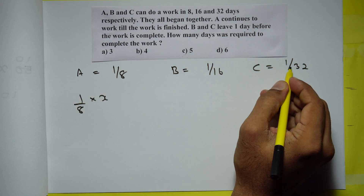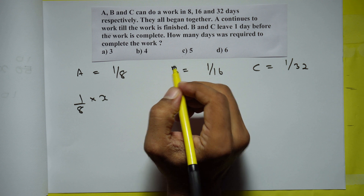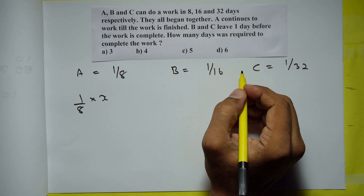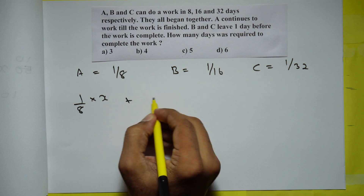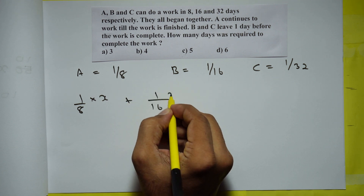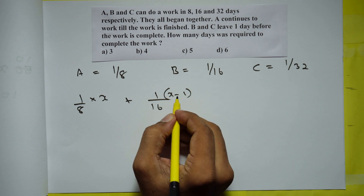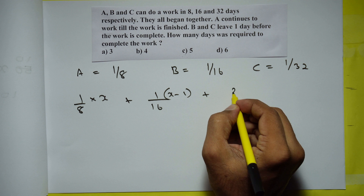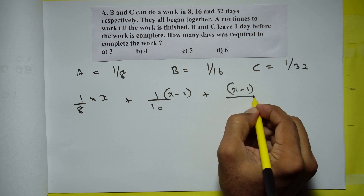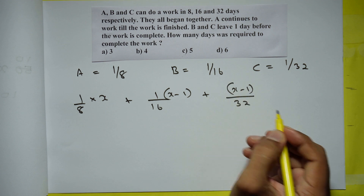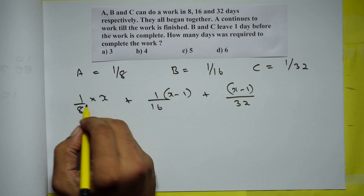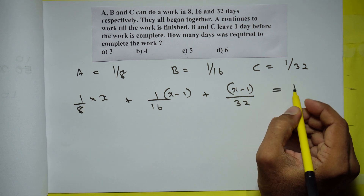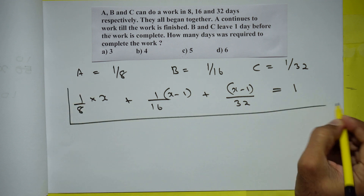Both B and C left 1 day before, which means both B and C work for X minus 1 days. So every day B will do 1/16th of the work for X minus 1 days. Similarly, C also works for X minus 1 days, doing 1/32 part of the work per day. In X days the whole work is completed, which equals 1.